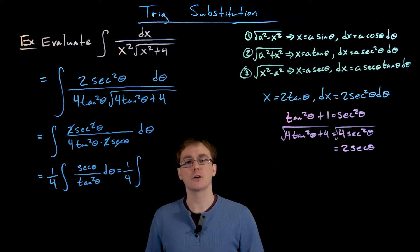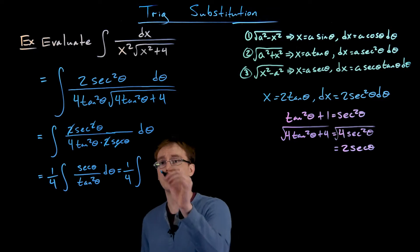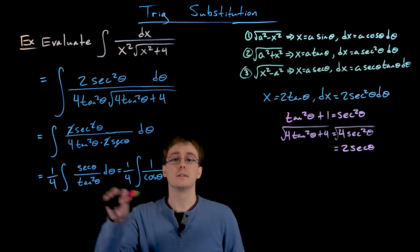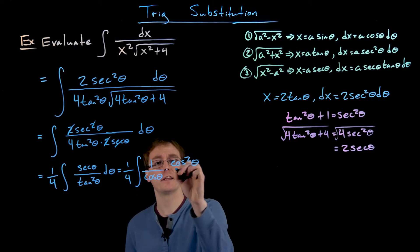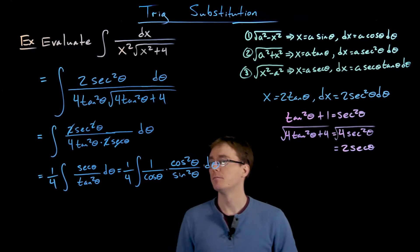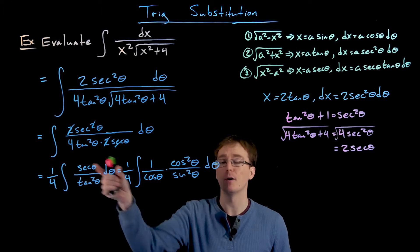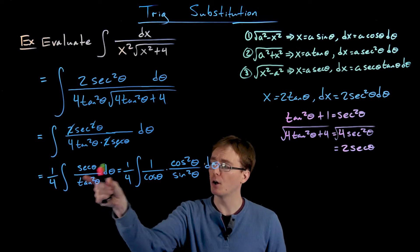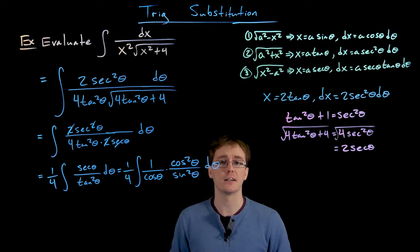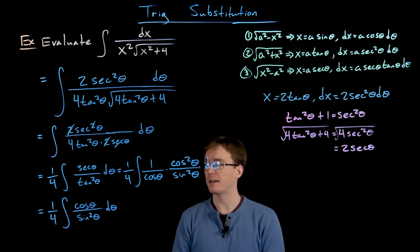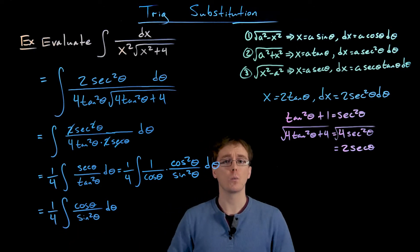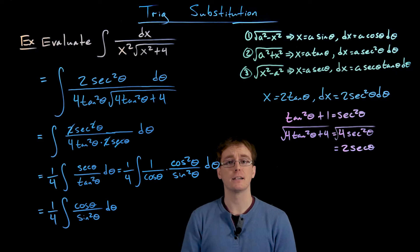Inside the integral we have secant of theta divided by tangent squared of theta. This isn't quite in the form we'd like for powers of secant and tangent, so we rewrite everything in terms of sine and cosine. Secant of theta is 1 over cosine of theta, and dividing by tangent squared is the same as multiplying by cotangent squared, which is cosine squared over sine squared. After rewriting, we can cancel one factor of cosine, leaving 1/4 times the integral of cosine of theta divided by sine squared of theta.